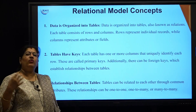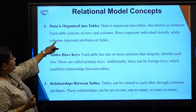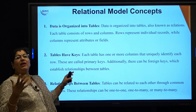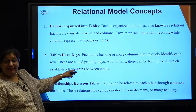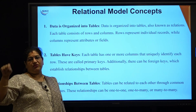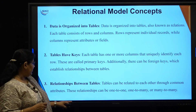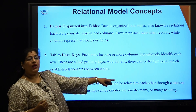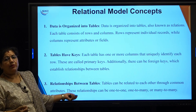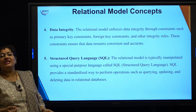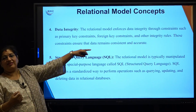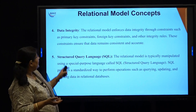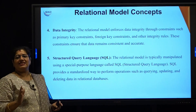Let us quickly review the various concepts in a relational model. First, data is organized in the form of tables — a relation is a collection of rows and columns, and there can be multiple tables in a database. Tables have keys, and each record can be uniquely identified with the help of keys, which are a set of attributes. Different tables in a database are interconnected through a common attribute, and that relationship can be one-to-one, one-to-many, or many-to-many. The relational model enforces data integrity through constraints like primary key, foreign key, domain constraints, and integrity rules, ensuring data remains consistent and accurate.